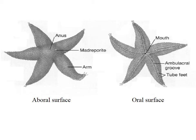The oral surface is the side with the mouth, and that face is down. The aboral surface is the top, and that face is up. Here you'll see the ambulacral groove, which you'll find in the bottom of every starfish arm. The tube feet stick out of that ambulacral groove — the walking groove.